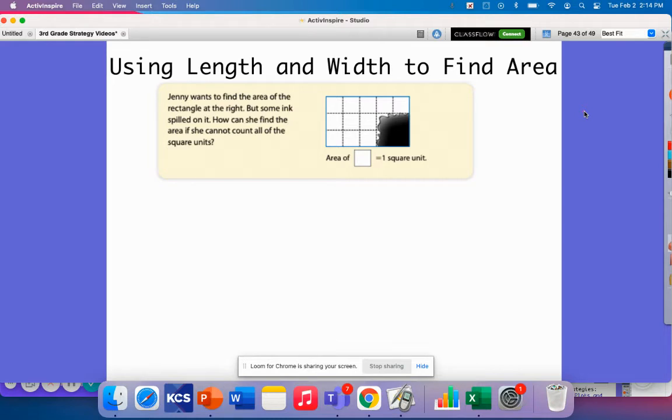Our first example here says Jenny wants to find the area of the rectangle at the right, but some ink spilled on it. How can she find the area if she cannot count all of the square units?